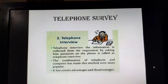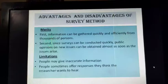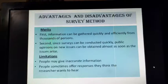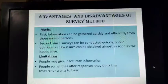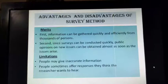Controlled observation is also used for conducting surveys. Coming to the merits and limitations of survey method: information can be gathered quickly and efficiently from thousands of persons, and since surveys can be conducted quickly, public opinions can be obtained as soon as possible. Certain limitations include that people may give inaccurate information, and sometimes people may offer responses which they think the researcher wants to hear.